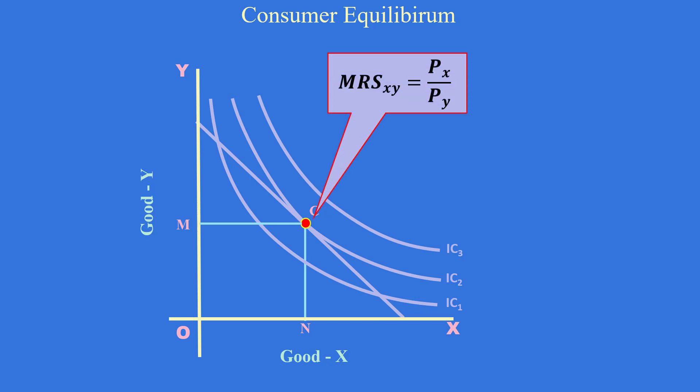Marginal rate of substitution of X for Y is equal to price ratio PX by PY. The indifference curve IC2 is convex towards the origin. Marginal rate of substitution of good X for good Y is diminishing.